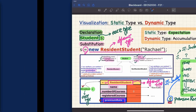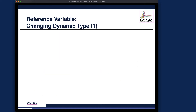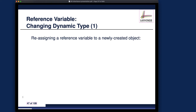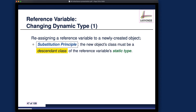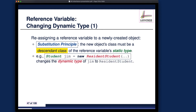Let's go back to the slides. There are two ways the dynamic type can change at runtime. The first way: you can reassign a reference variable to a newly created object using the new keyword in Java. The new object's class must be a descendant class of the reference variable's static type, otherwise you cannot fulfill the expectation imposed by the static type.